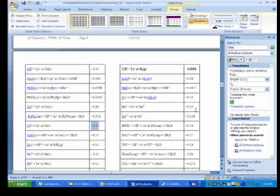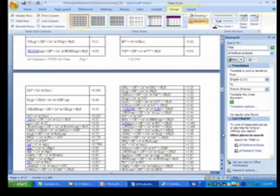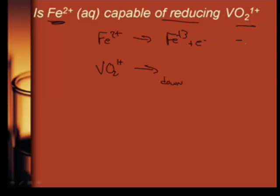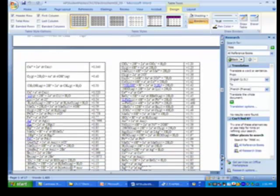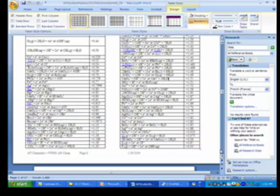So let's do the iron number first. That was down on the low, the jumbled, messy list right there. Positive 0.77, but we're going to flip it. So it's going to be negative 0.77. So now we're going to find the VO2 and see if we can get a number that's more positive than positive 0.77. So this should be a positive number.